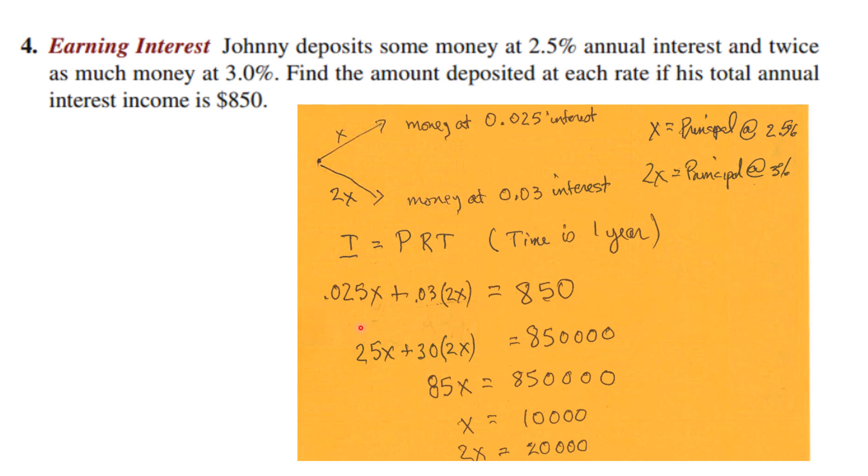I multiplied all the way through by 1000 to clear my decimals, so I got 25x plus 60x equals 850,000. That's 85x equals 850,000, so x is $10,000 and 2x is $20,000.